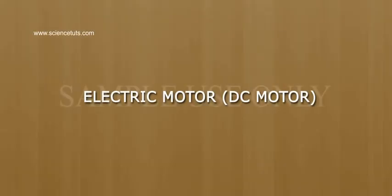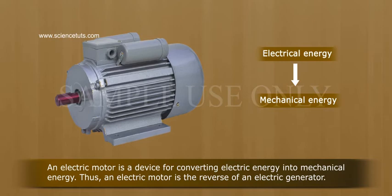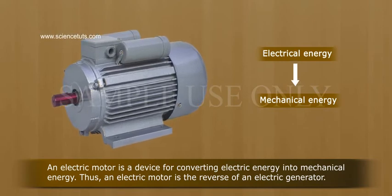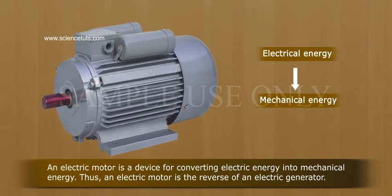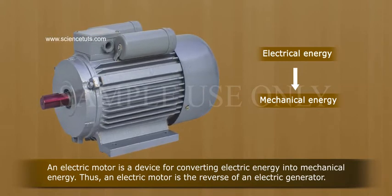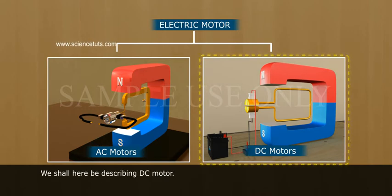Electric Motor — DC Motor. An electric motor is a device for converting electric energy into mechanical energy. Thus, an electric motor is the reverse of an electric generator. There are two types of electric motors: one, AC motor, and two, DC motor. We shall here be describing the DC motor.